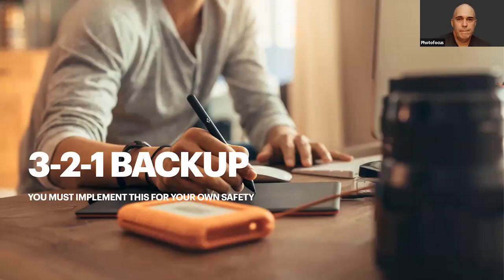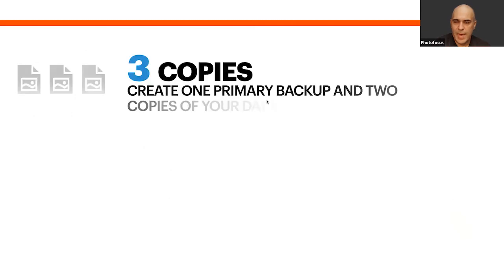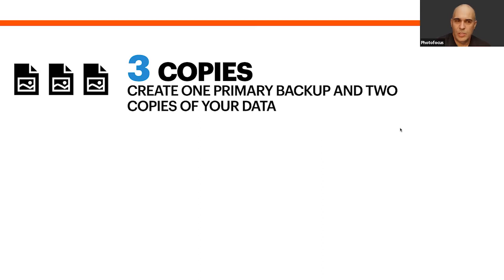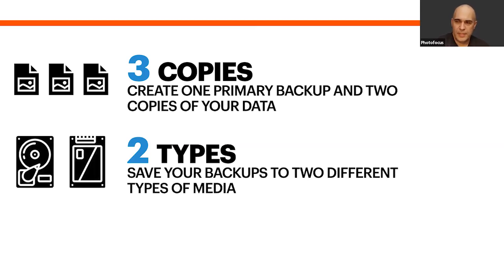3-2-1 backup is a straightforward concept. Three copies — one that you work from and two additional copies you do not touch. Two types of media — ideally two physically different types: SSDs and hard drives, or a RAID and a regular hard drive. One copy off-site. I use a more expensive RAID with redundancy for my working drive.